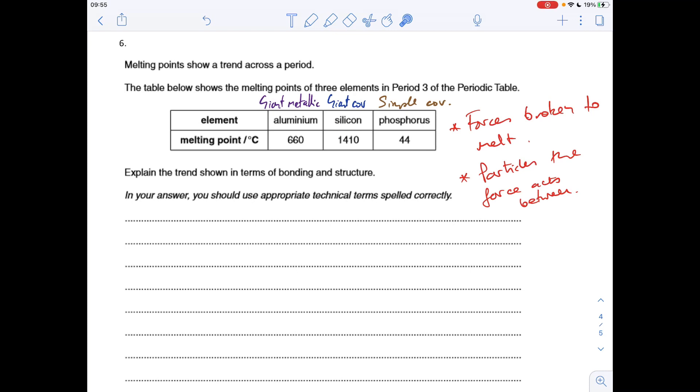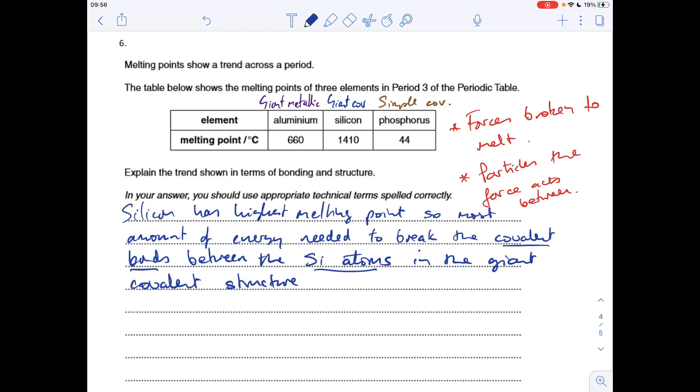And then at the end we'll just come up with some kind of relative strength of forces from the melting points. So I'm going to start with silicon. Silicon's got the highest melting point, so that's telling us that the most amount of energy is needed to break the covalent bonds, so the forces broken to melt, between the silicon atoms, particles, the force acts between. And there's the structure in the giant covalent structure.